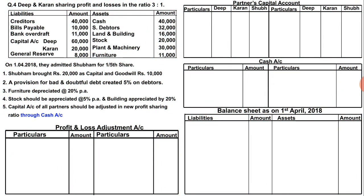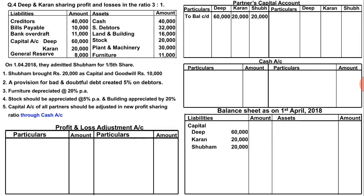The new capital is 60,000 for Deep, 20,000 for Karan, and 20,000 for Shubham. We will enter these figures. In the balance sheet liability side, we will write the capital account — Deep, Karan and Shubham — that is 60,000, 20,000, 20,000, giving a total of 1,00,000.